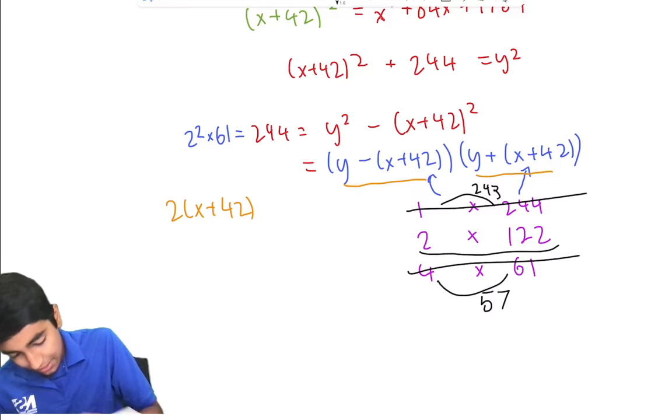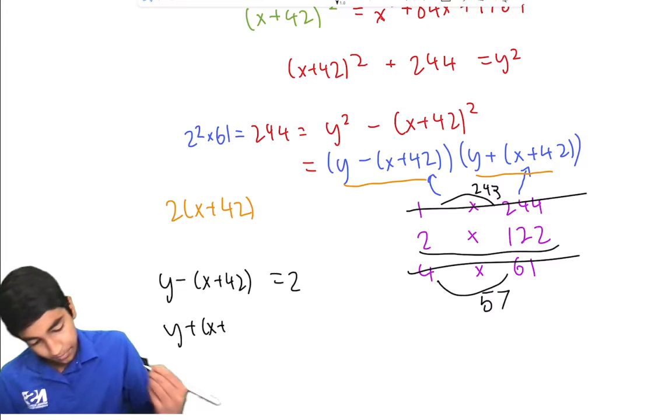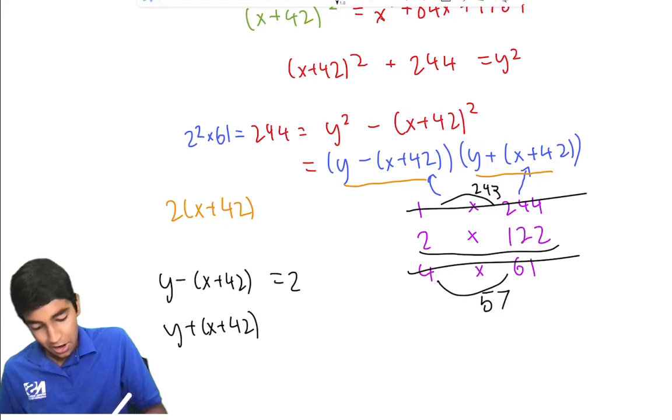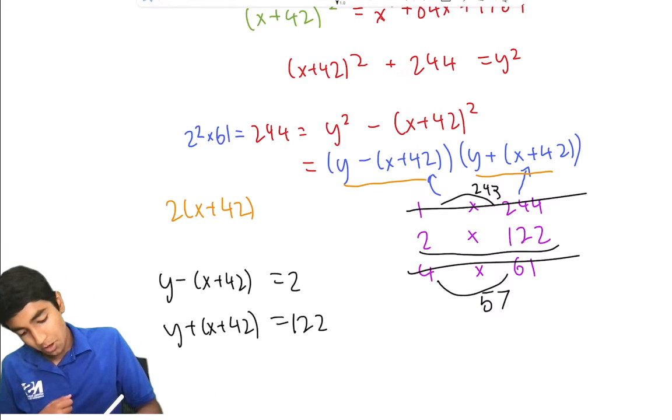So now we're just left with this. And now it's y - (x + 42) = 2, and y + (x + 42) = 122. We add them up to get rid of that x + 42 term, 2y = 124, and then we're left with the fact that y is 62.